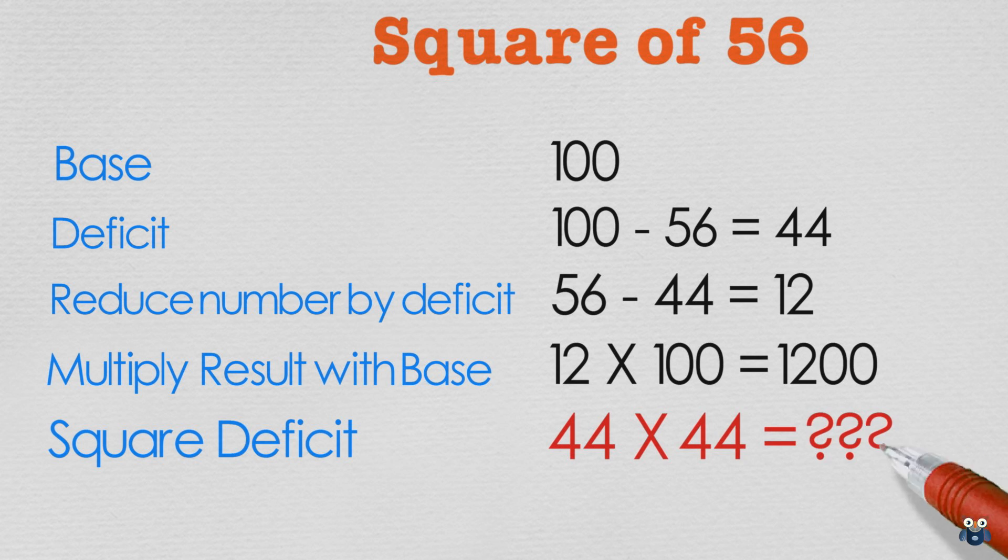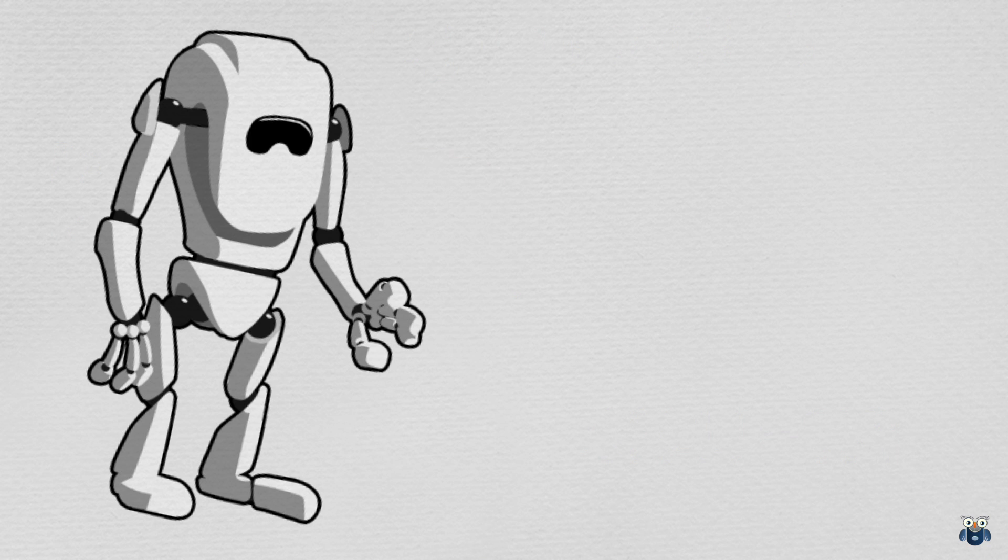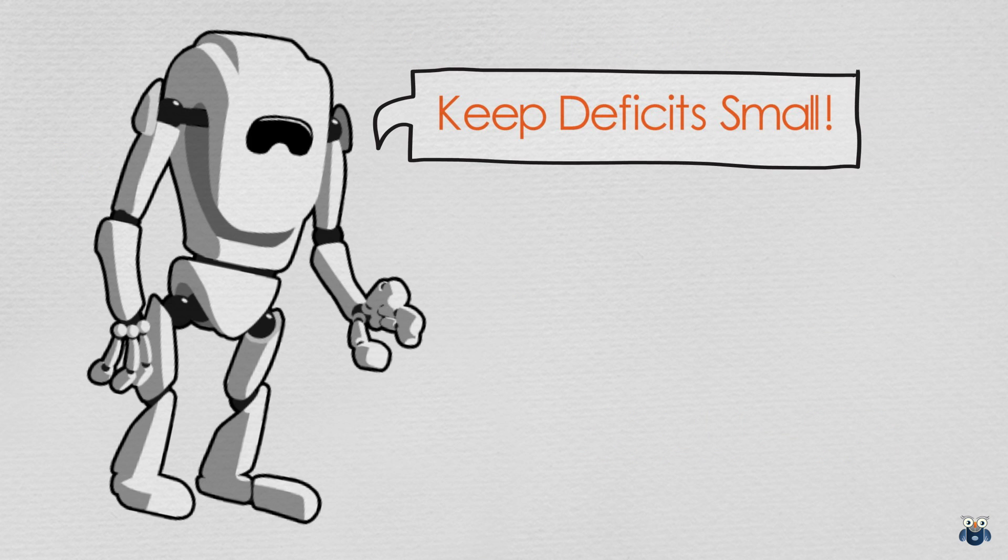But our deficit is 44. So what is 44 times 44? This isn't easy, right? So as a rule of thumb when you are using this method, please ensure that the deficits are small enough so that you can square them mentally.